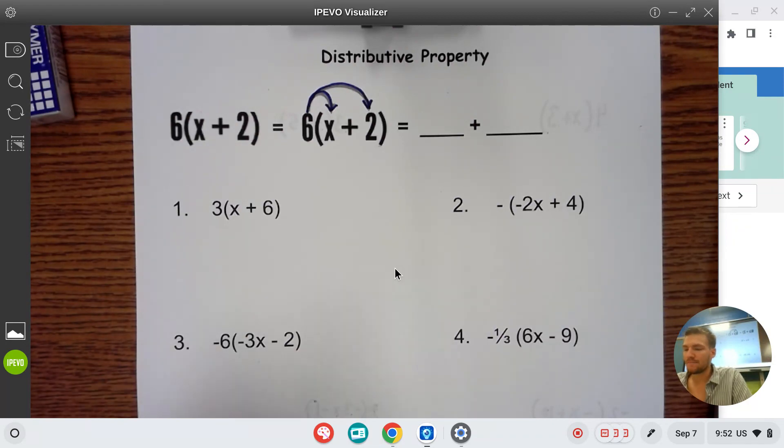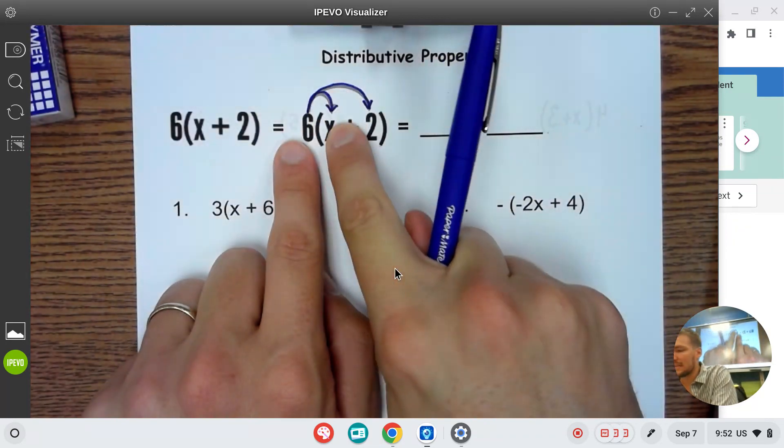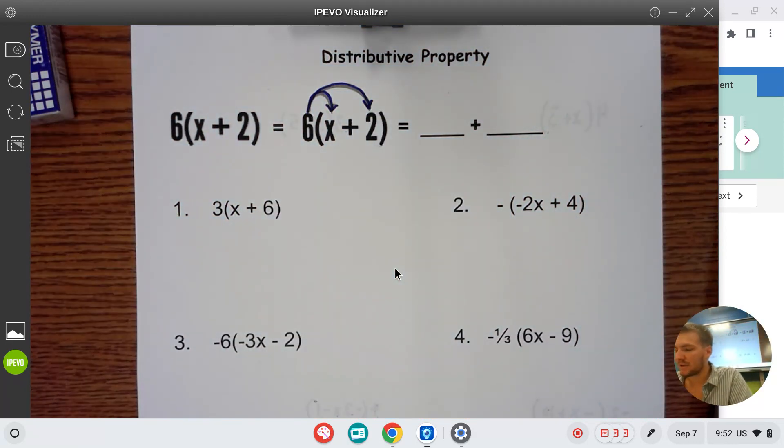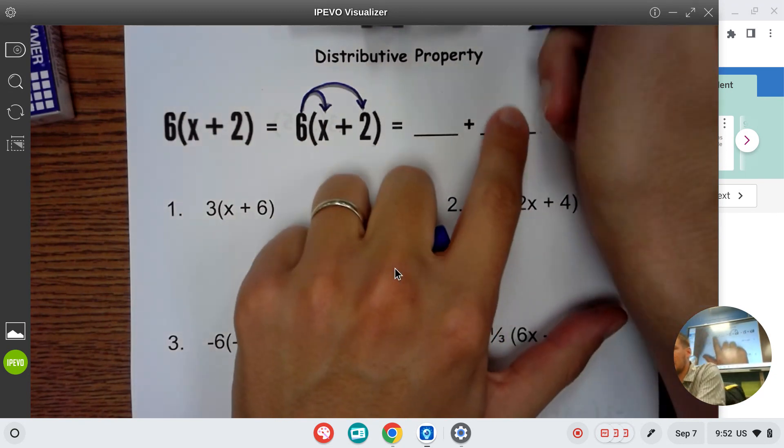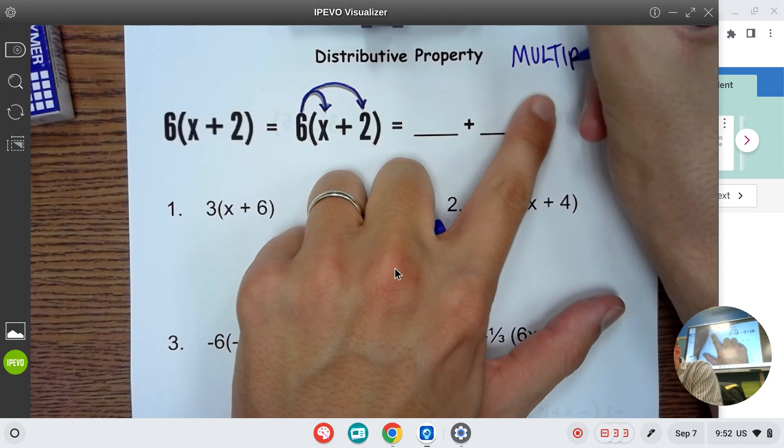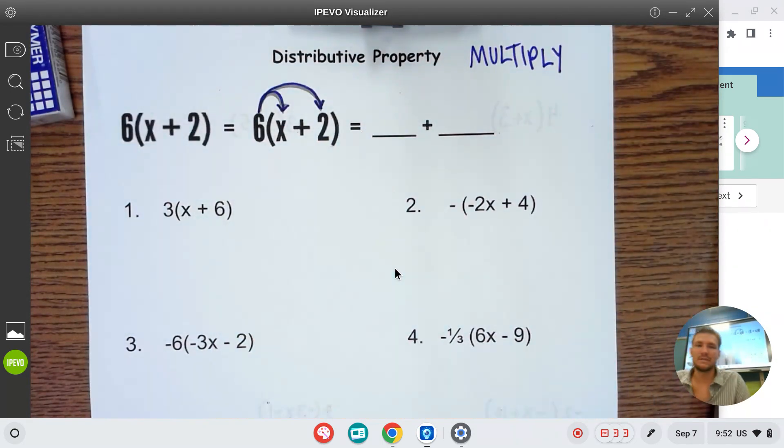For the most part, we hopefully recall these nice arrows distributing that front number to the other numbers inside the parentheses. Distributive property, and I think we should really write this at the top, is a multiplication property. It's all about multiplying.